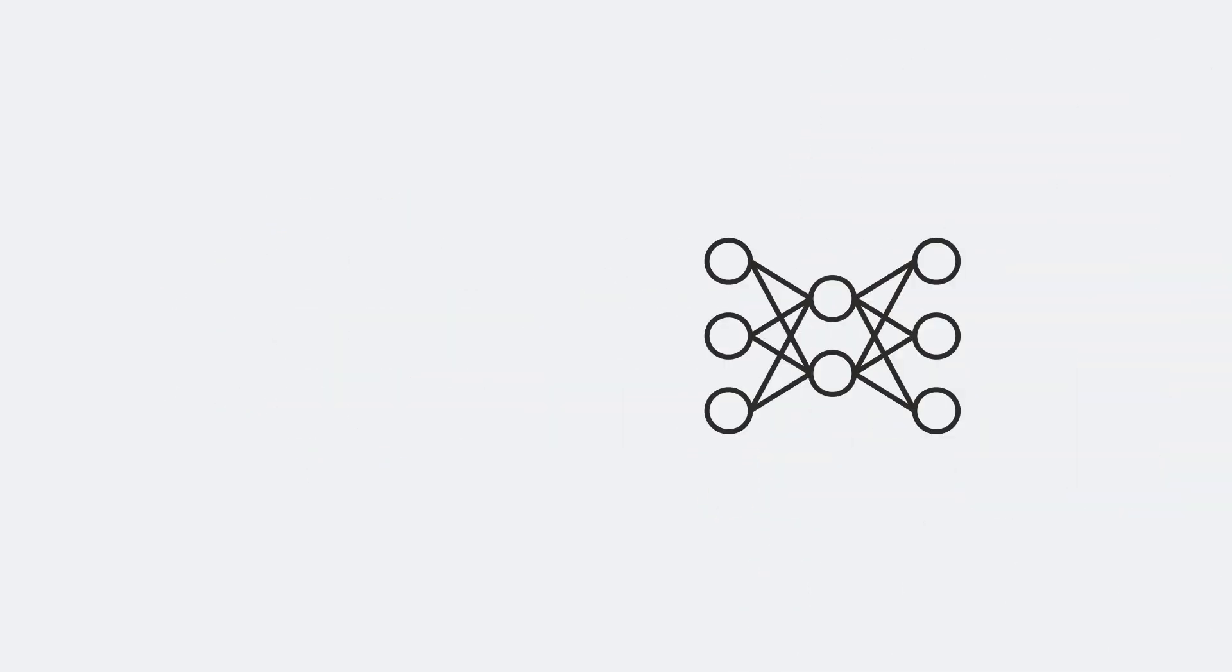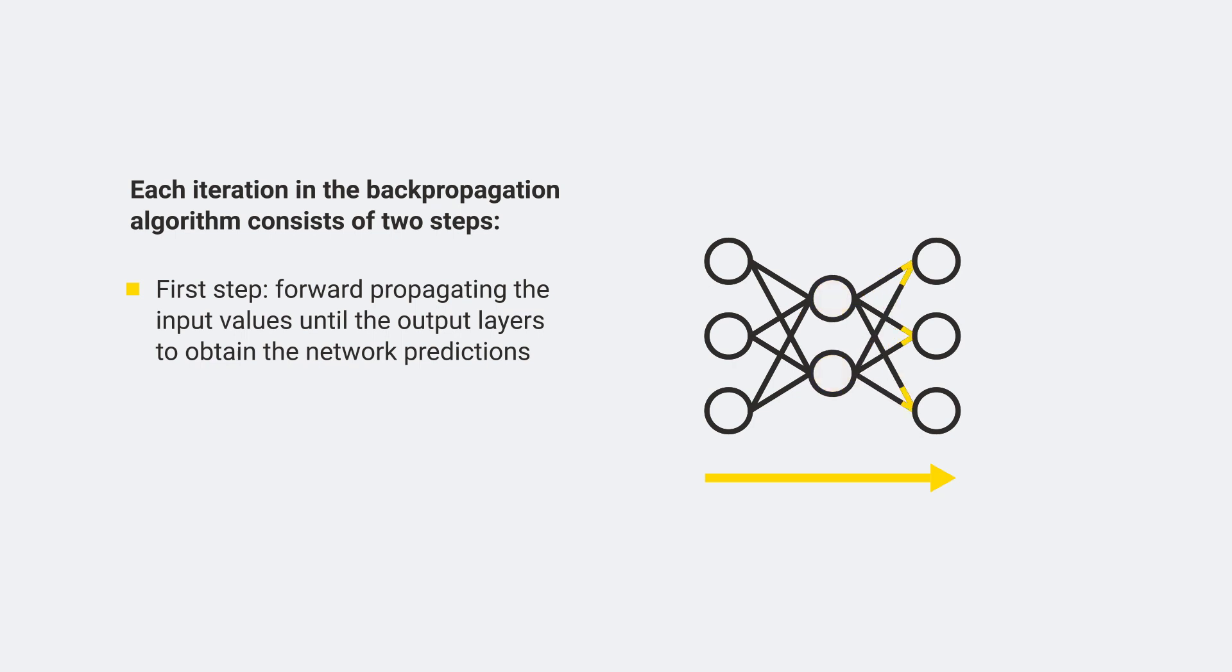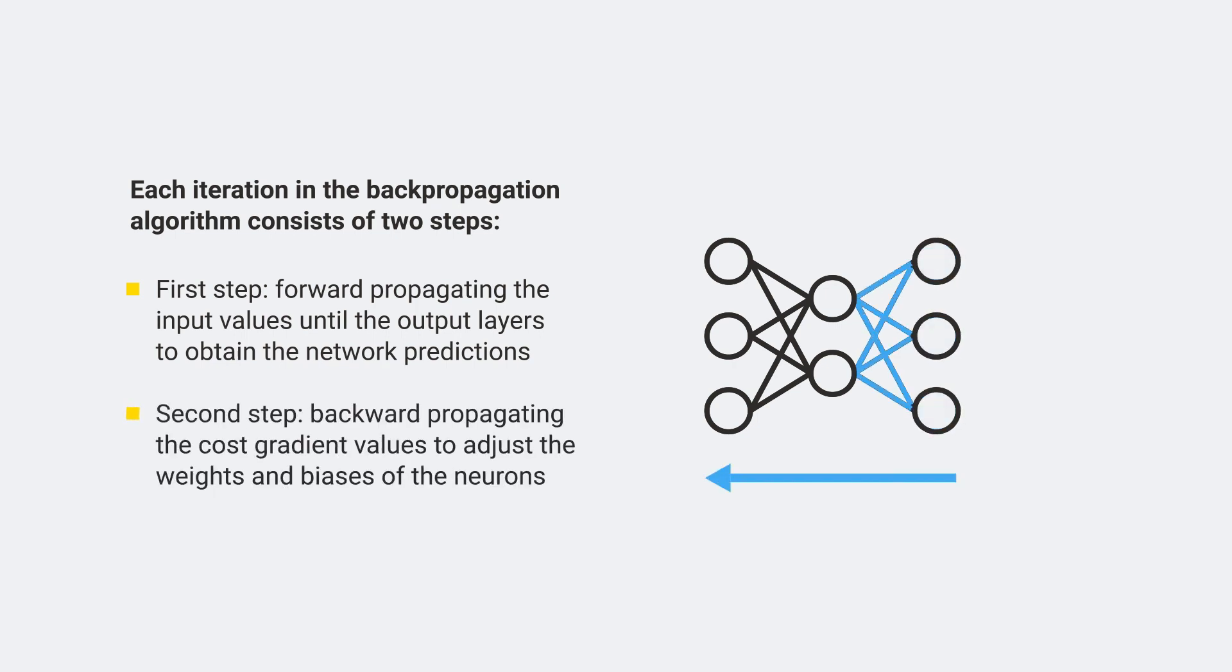To summarize, each iteration in the backpropagation algorithm consists of two steps. First step, forward propagating the input values until the output layers to obtain the network predictions. And second step, backward propagating the cost gradient values to adjust the weights and biases of the neurons, layer after layer.